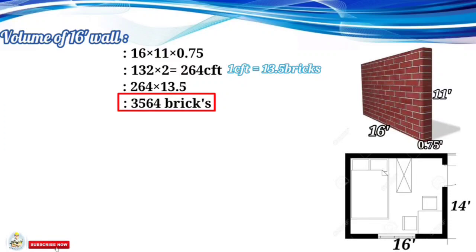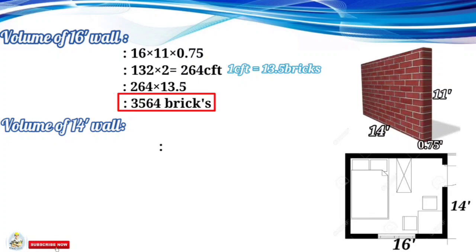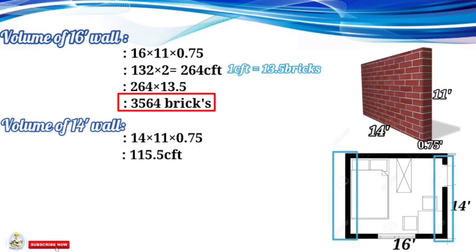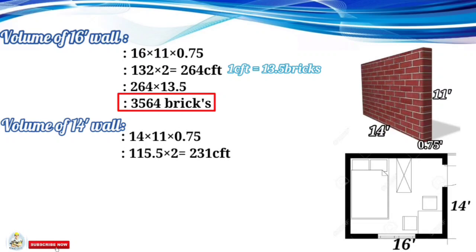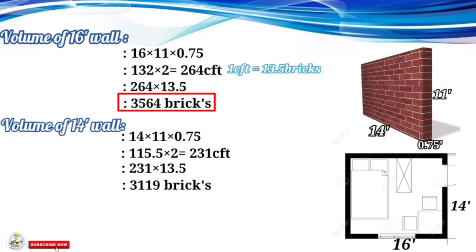Now we find the number of bricks for the 14-foot walls. The volume is 14 × 11 × 0.75, which gives 115.5 cubic feet. Since there are two 14-foot walls, we multiply by 2: 115.5 × 2 = 231 cubic feet. With 13.5 bricks per cubic foot, 231 × 13.5 gives us 3,119 bricks for the 14-foot walls.